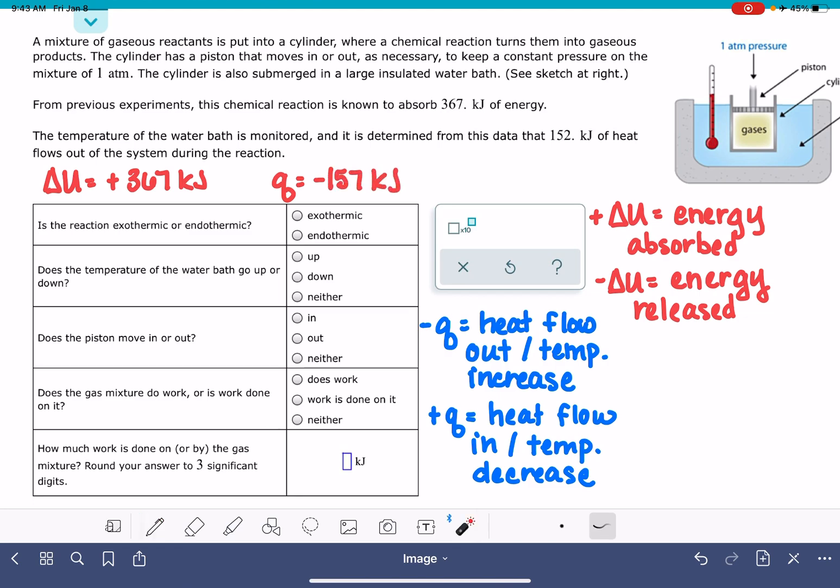Now let's see what we can do with the questions that we're being asked. Is this reaction exothermic or endothermic? That comes from the sign of Q. If the sign of Q is negative, and heat is flowing out, that is exothermic. And if the sign of Q is positive, heat is coming in, that is endothermic. Since we have a negative Q, our reaction is exothermic.